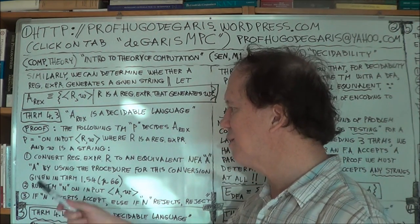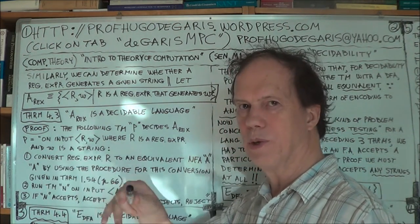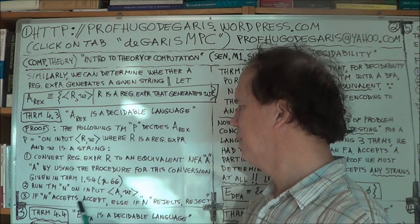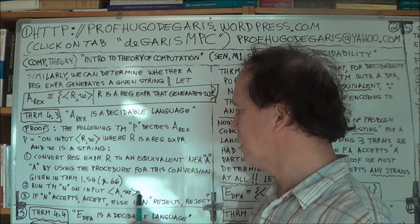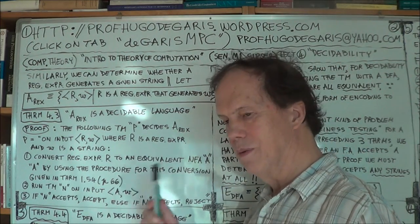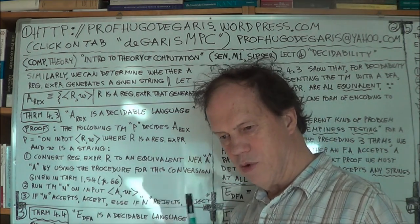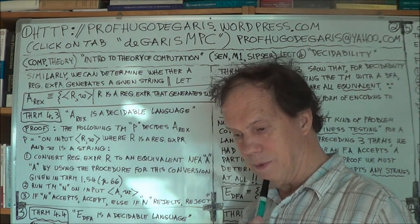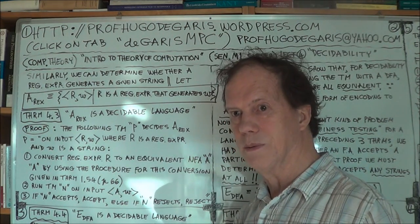So if this Turing machine — this component of P — so N is a part of P, a smaller part — if N accepts, we'll then have P accept, and if N does not accept this, we'll then have P reject. So P is either accepting or rejecting, and therefore P is a decider, and therefore this language here is decided — it's a decidable language.